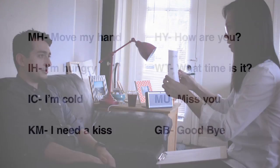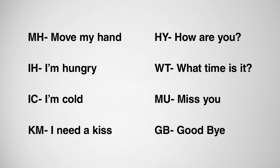When a letter is selected, the communication partner should use a pad of paper to keep track of the letters the user is spelling. For common messages, create a short list of codes consisting of two letters that represent the entire message. For example, MH could indicate 'move my hand.'